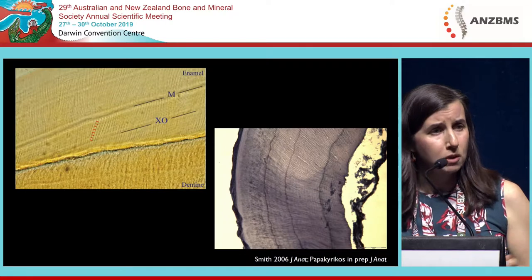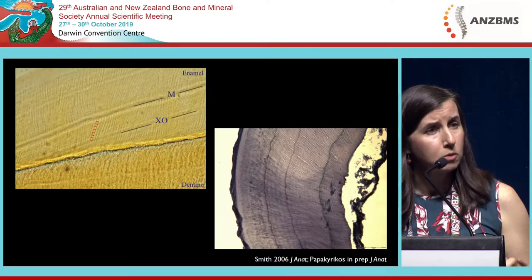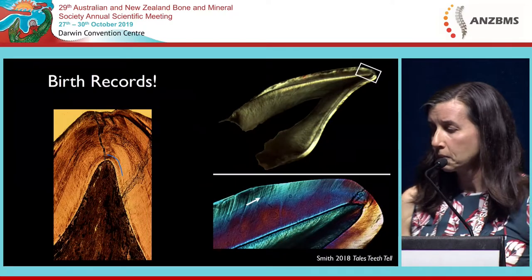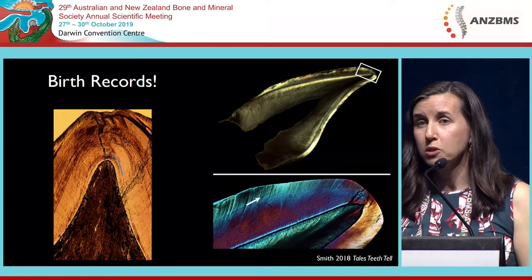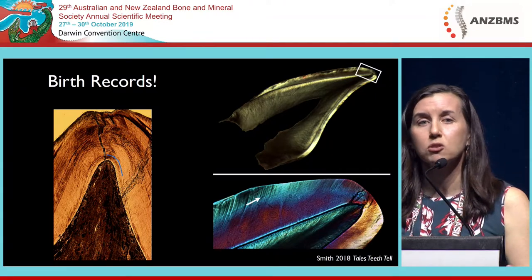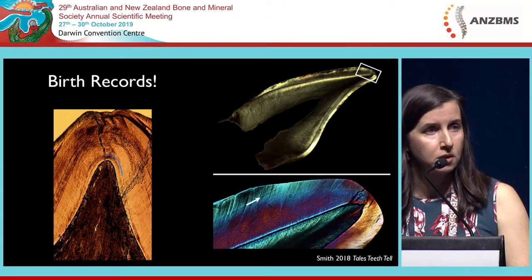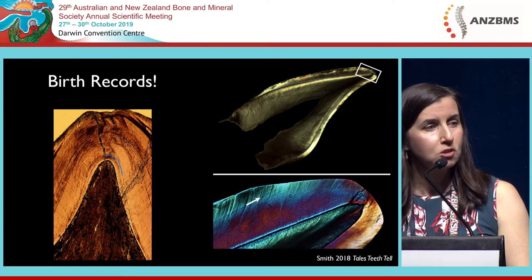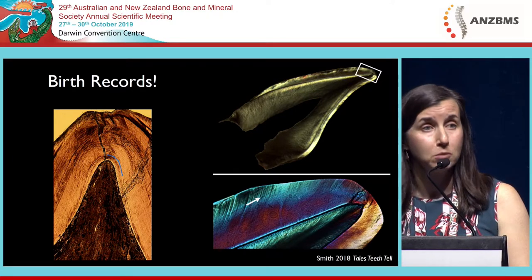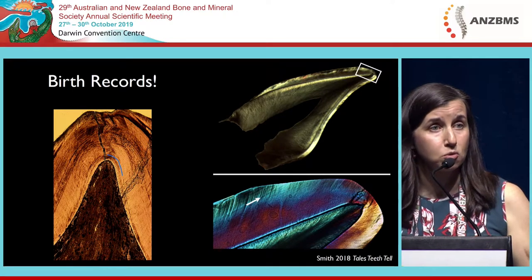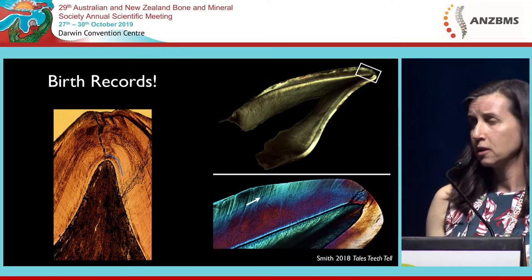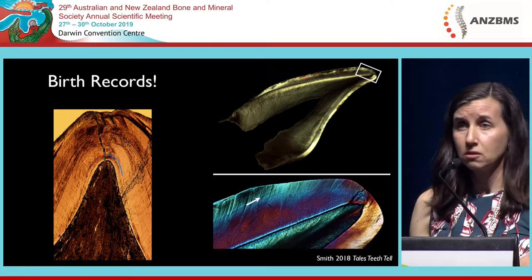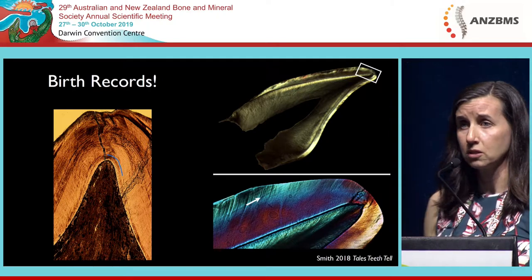Because teeth don't remineralize, this is a permanent record of our childhood. Not only does the daily rhythm record, but so do physiological disruptions, including our birth. Our birth shows up as a dark mineralized line inside all of our baby teeth — our deciduous teeth — as well as our first permanent molar. And it tends to show in the same position in all the teeth of individuals.